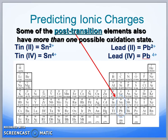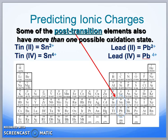We also have post-transition elements that could differ as well. We have tin and lead, which are both in Group 4. They can have either a charge of 2 or 4, and they follow the same rule of showing Roman numerals to tell you exactly what charge is present. Most times, tin and lead are going to show you what that oxidation state is — the charge — via Roman numerals.